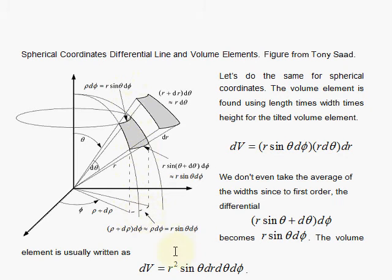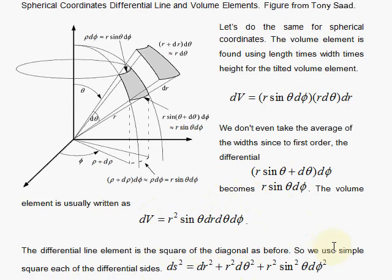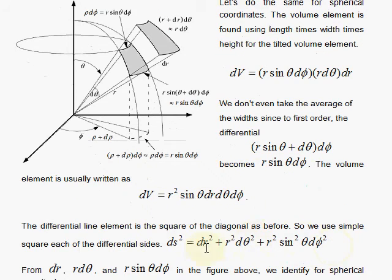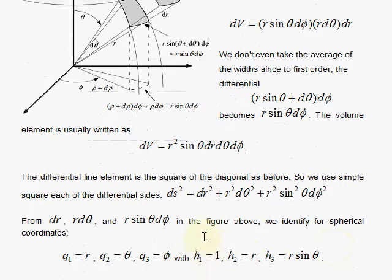So once you have that, you can multiply them all together and get your familiar r squared sine theta dr d theta d phi. So here, what are the h's? Well, the h's would be here for the first variable, which I'm going to call q1 as the r. That would simply be a 1, since you had just dr, dr up here.